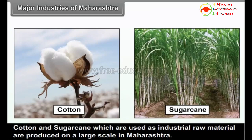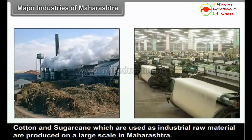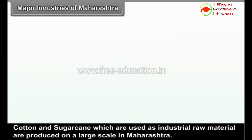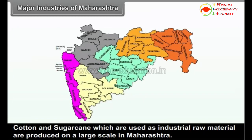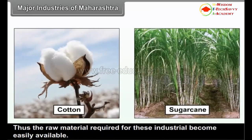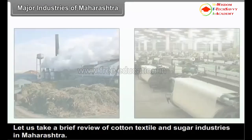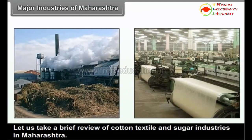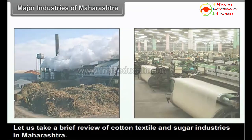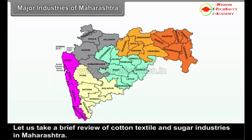Cotton and sugarcane, which are used as industrial raw materials, are produced on a large scale in Maharashtra. Thus, the raw material required for these industries becomes easily available. Let us take a brief review of cotton textile and sugar industries in Maharashtra.